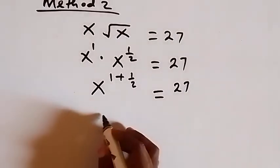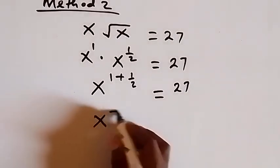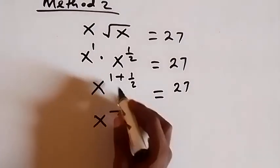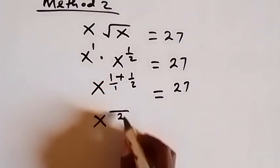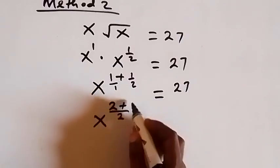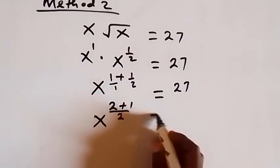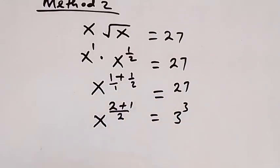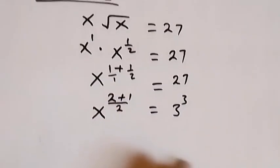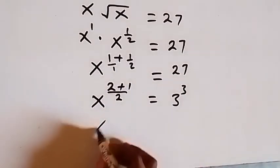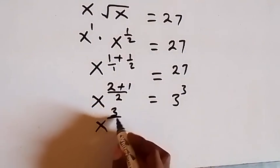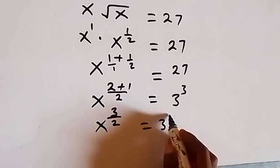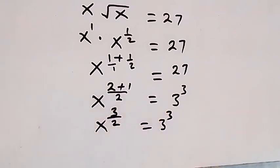When we bring this power together, the LCD is 2. 1 in 2 is 2 times 1, that's 2 plus 1. We can write this as 3 raised to power 3, same thing as 27. So we have x raised to power 3 over 2 equals to 3 raised to power 3.